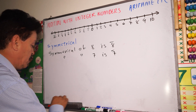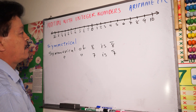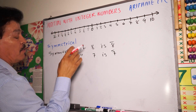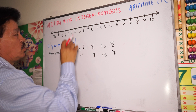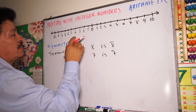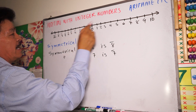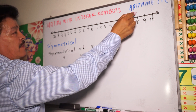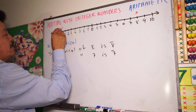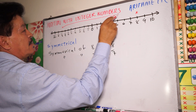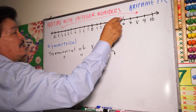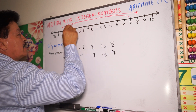When you add symmetrical numbers, the result — the addition — is zero. For example, you have eight, and its symmetrical is negative eight. The symmetrical of seven is negative seven, right?